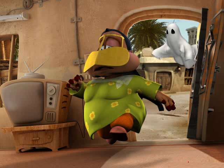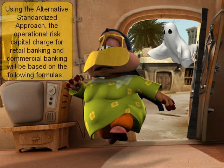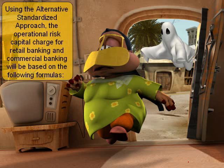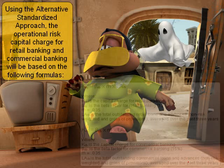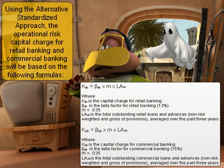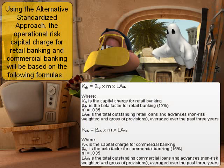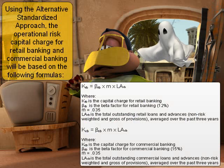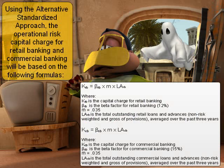Using the alternative standardized approach, the operational risk capital charge for retail banking and commercial banking will be based on the following formula. For the other six business lines, the calculation of operational risk capital charge will be based on the gross income and beta factor for that business line, as prescribed under the standardized approach.